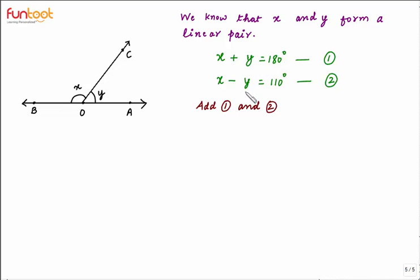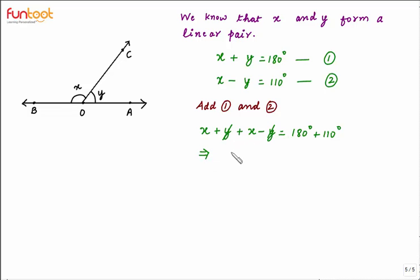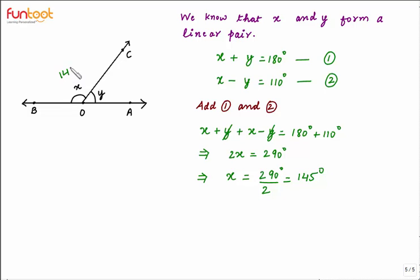In equation 1 we have plus Y, and in equation 2 we have minus Y, so if we add the two, these will get cancelled. Adding equation 1 and 2: X plus Y plus X minus Y is equal to 180 degrees plus 110 degrees. Cancelling plus Y with minus Y, 2X is equal to 290 degrees, which implies X is equal to 290 divided by 2, that is equal to 145 degrees.